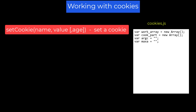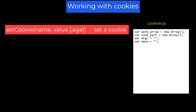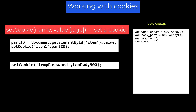setCookie: to set a cookie, you invoke it by passing the name you are giving the cookie and the value. If you want to control when the cookie is automatically deleted, you can specify a third value — how many seconds should elapse before the cookie is automatically deleted. For example: partId = document.getElementById('Item').value; setCookie('Item1', partId). Or, assuming there is a temporary password built in TEMPWD and 900 seconds is 15 minutes, you might set a cookie with a maxAge of 900 seconds — a temporary password that will expire in 15 minutes.